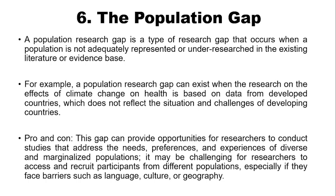The sixth type is the population gap. A population research gap occurs when a population is not adequately represented or is under-researched in the existing literature. For instance, a population research gap can exist when research on the effect of climate change on health is based on data from developed countries, which does not reflect the situation and challenges of developing countries. In this case, the population used may not represent the population upon which the findings are being generalized.